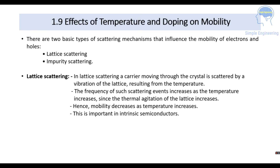Considering the effect of temperature and doping on mobility, there are two types of scattering mechanisms: lattice scattering and impurity scattering. In lattice scattering, a carrier moving through the crystal is scattered by vibrations of the lattice resulting from temperature. As temperature increases, lattice vibrations increase, scattering events become more frequent, and mobility decreases. This is very important in intrinsic semiconductors.